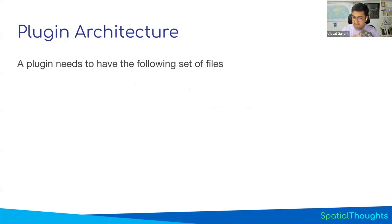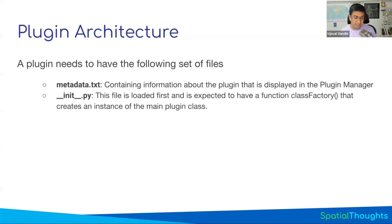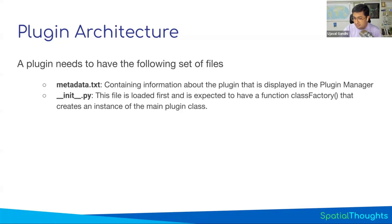To have a folder recognized as a plugin, you need certain special files. The first file you need is called metadata.txt — every plugin needs to have this. It's a text file that describes the name of the plugin, who the author is, the version number, and so on. The second file every plugin needs is the special file called __init__.py. The Plugin Manager checks for this file when QGIS starts.